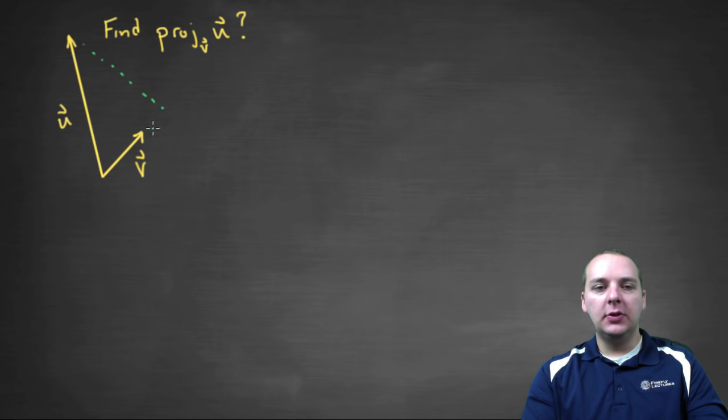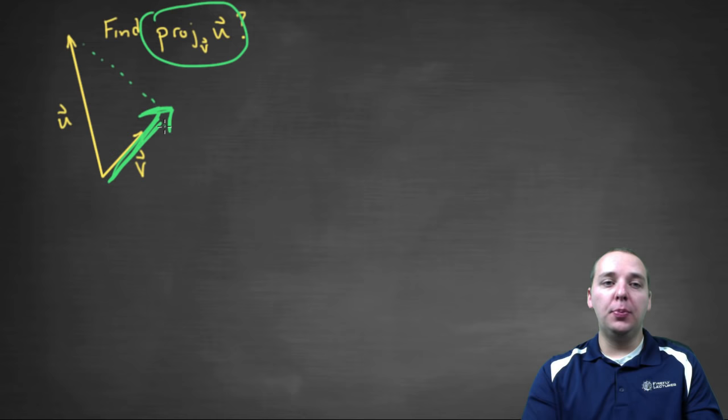So here, this green vector that I'm drawing right here, that would be the projection of u onto v. Now notice in this example, the projection is longer than v and that's okay. In the other example, the projection was shorter than v. But nevertheless, it's going to be some scalar multiple of v. So hopefully you got the same vector that I did here.